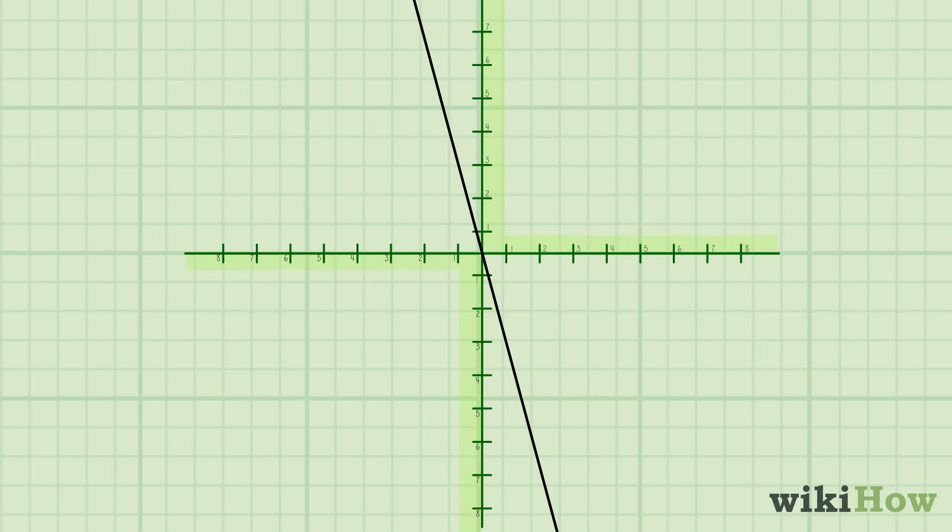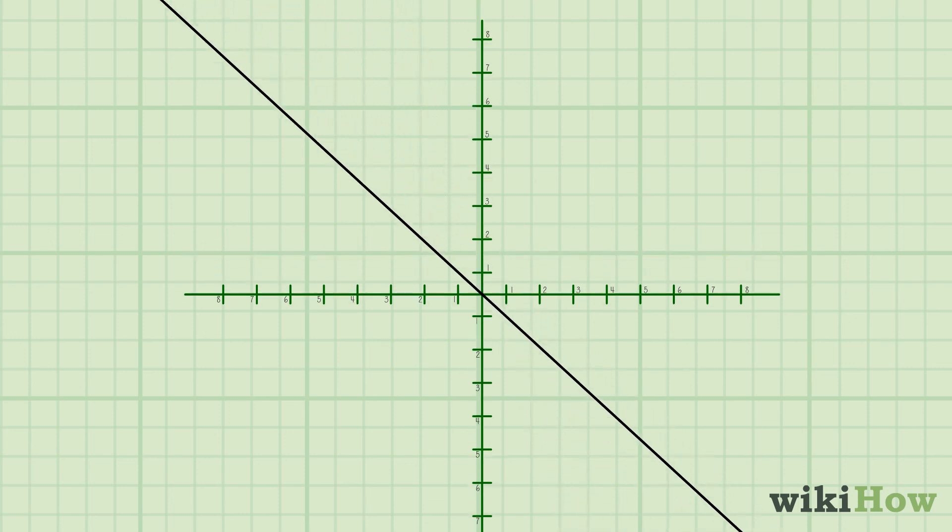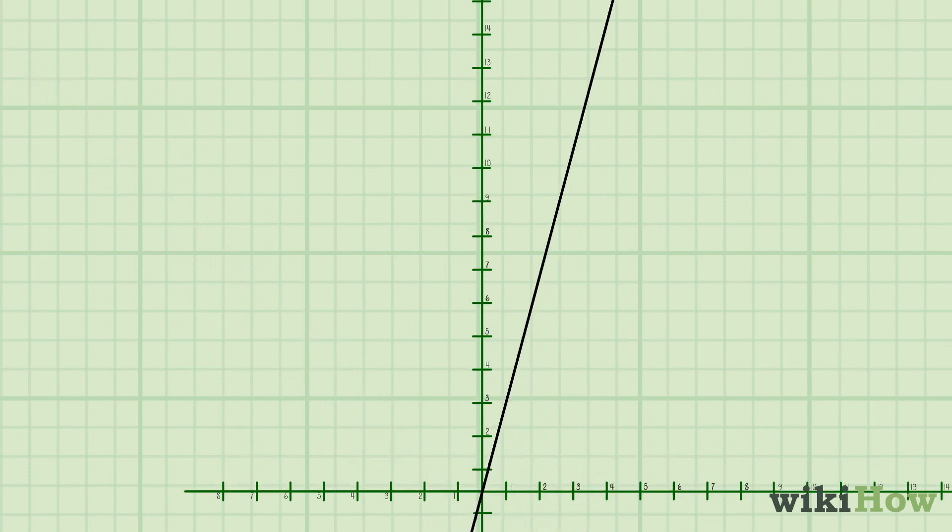For instance, a line with a slope of minus 7 is steeper than a line with a slope of minus 2. Similarly, a line with a slope of 15 is steeper than a line with a slope of 3.